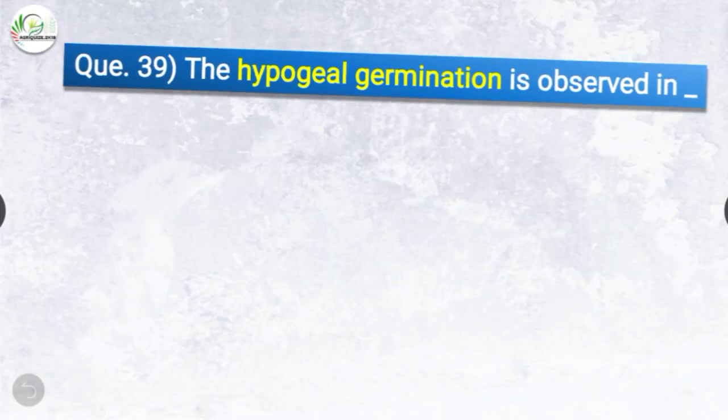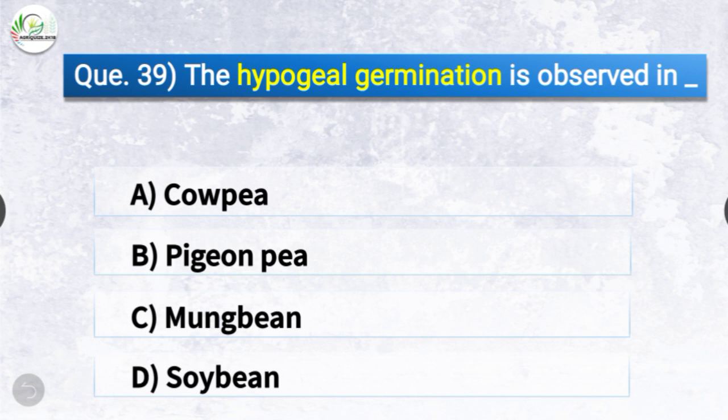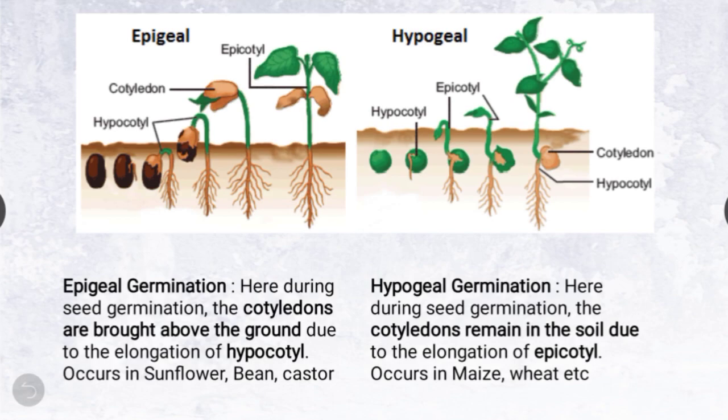Question number thirty-nine: Hypogeal germination is observed in — the options are cowpea, pigeon pea, mung bean, or soybean. The correct answer is option B — pigeon pea. Hypogeal germination is observed in pigeon pea.